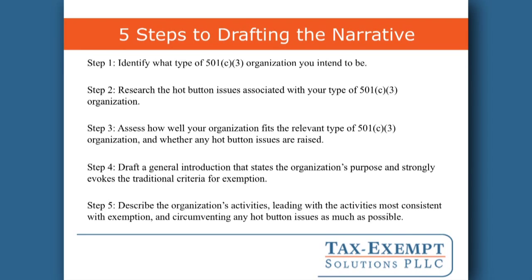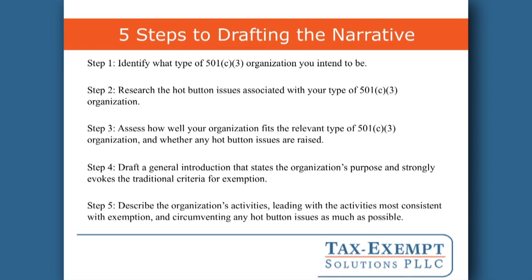With that principle in mind, I have five steps to drafting the narrative. Step one: identify what type of 501 organization you intend to be. Step two: research the hot-button issues associated with your type of 501 organization — the controversial activities and issues that may lead the IRS to reject an organization of your type. Step three: assess how well your organization fits the relevant type of 501 organization and whether any hot-button issues are raised. Steps four and five involve drafting: step four, draft a general introduction that states the organization's purpose and strongly evokes the traditional criteria for exemption. Step five, describe the organization's activities, leading with those most consistent with exemption and circumventing any hot-button issues as much as possible.